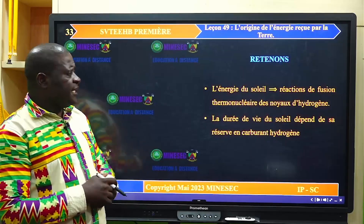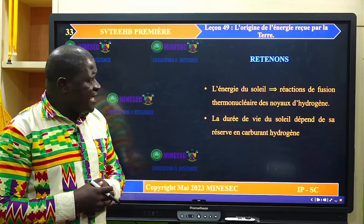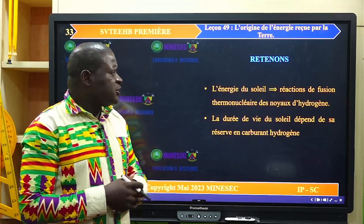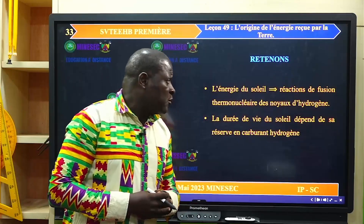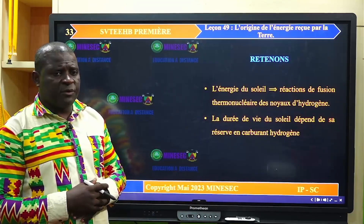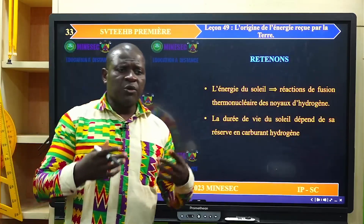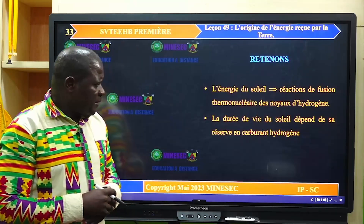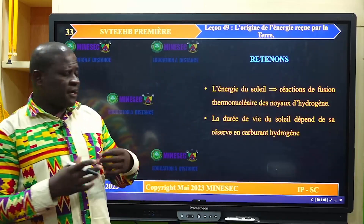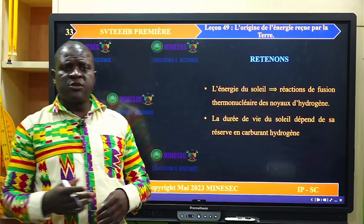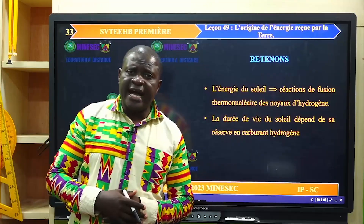On peut donc retenir que selon l'hypothèse de la fusion thermonucléaire, l'énergie du soleil est issue des réactions de fusion thermonucléaire des noyaux d'hydrogène pour former des noyaux d'hélium dans le cœur du soleil. La durée de vie du soleil dépend donc de sa réserve en carburant d'hydrogène et permettra que le soleil brille pendant au moins 10 milliards d'années.